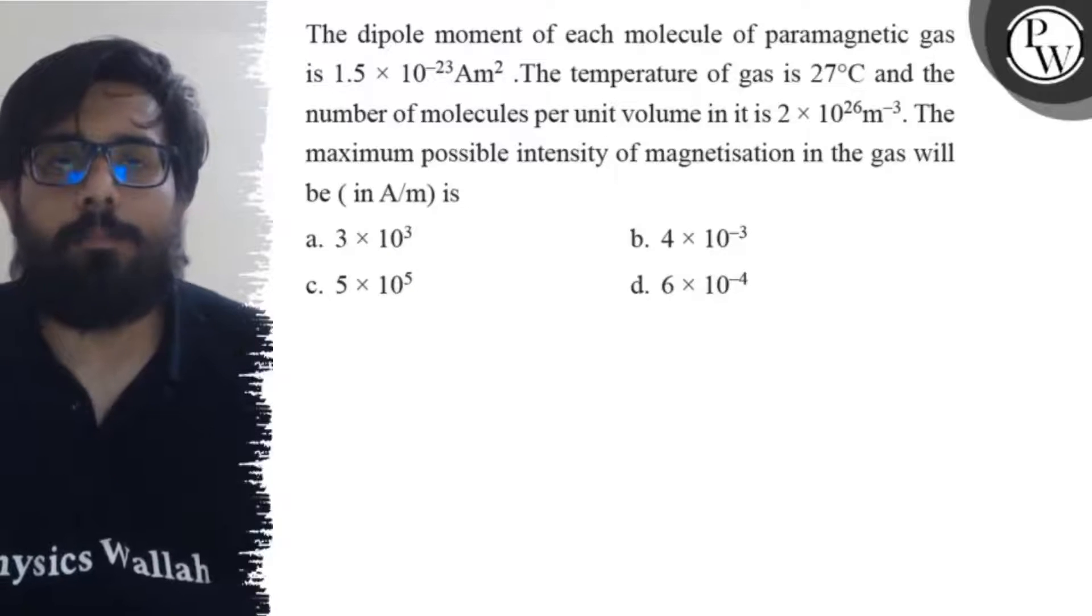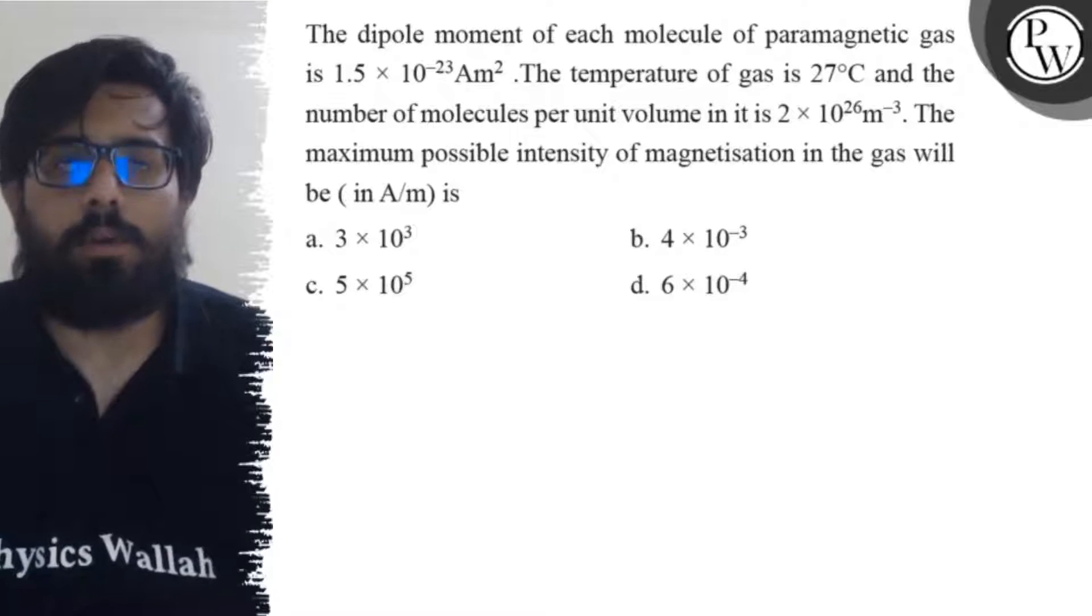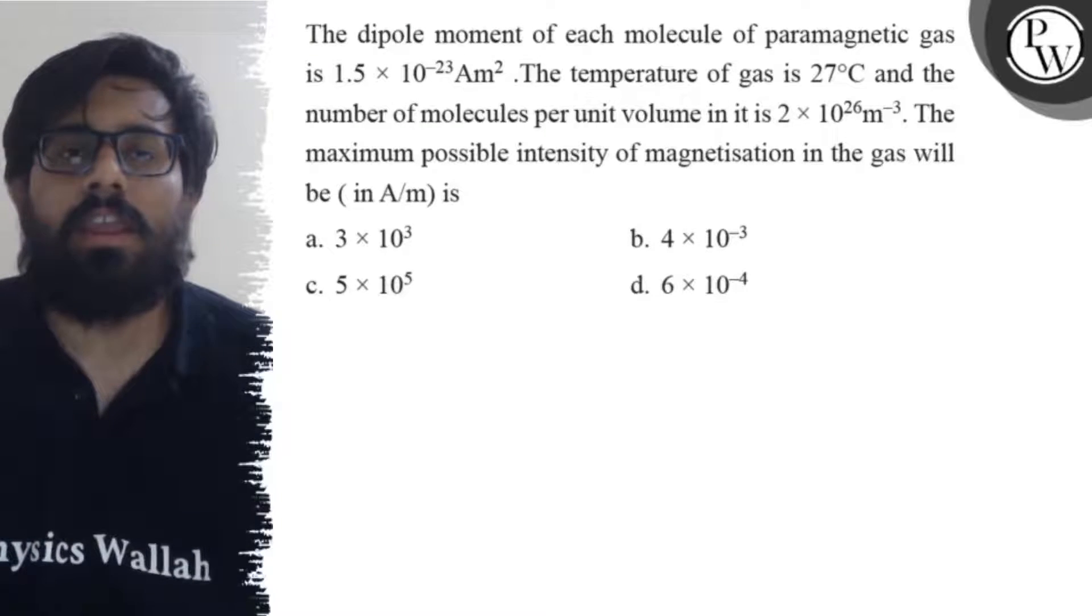Hello Bacho. So let's see the question. The dipole moment of each molecule of a paramagnetic gas is 1.5 × 10^-23 ampere meter square.